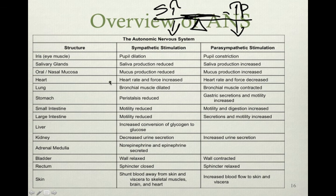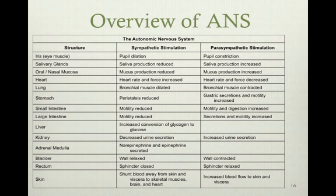Salivary glands: the sympathetic nervous system reduces salivary gland secretions — for instance, getting dry mouth just before a fight. The parasympathetic nervous system increases salivary gland production. Oral and nasal mucosa production is reduced by the sympathetic side and increased by the parasympathetic side.